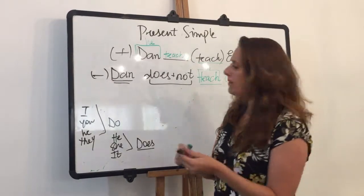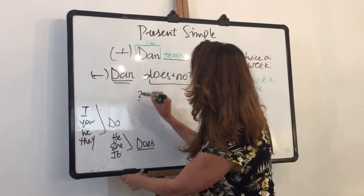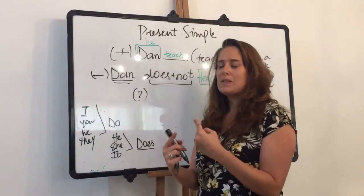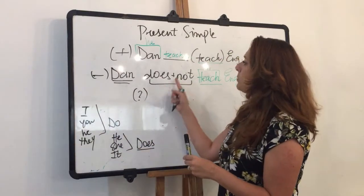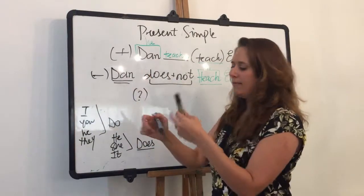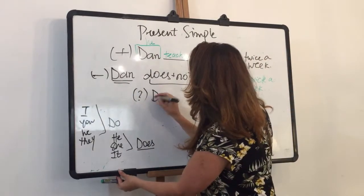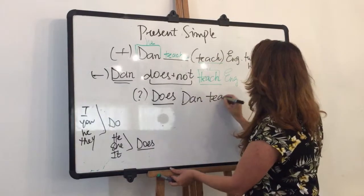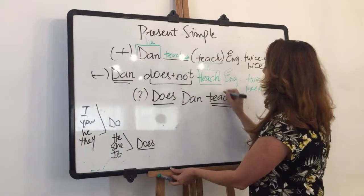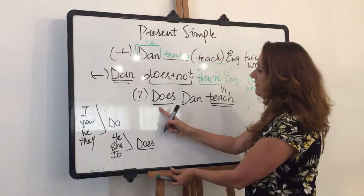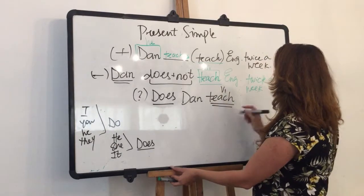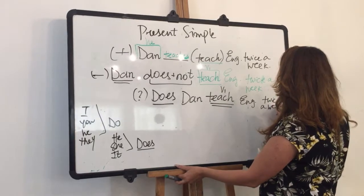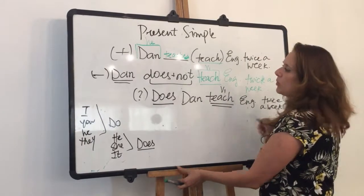Now I want to make a question. What do I do when I want to form a question? I have to swap places. I have to swap does and Dan. So it gets does Dan, and my verb of course stays in the V1, in the base form, because I have does. Does Dan teach English twice a week? Question mark.